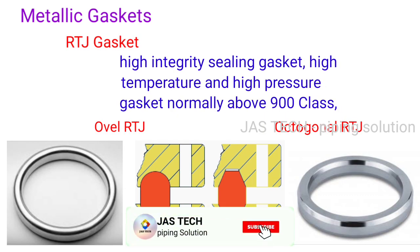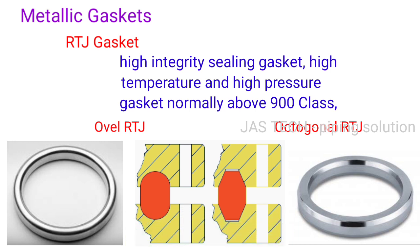Metallic gasket - RTJ (Ring Type Joint gasket): A high integrity sealing gasket used in high temperature and high pressure applications, normally above Class 900. There are two types generally used: Oval RTJ and Octagonal RTJ gasket.